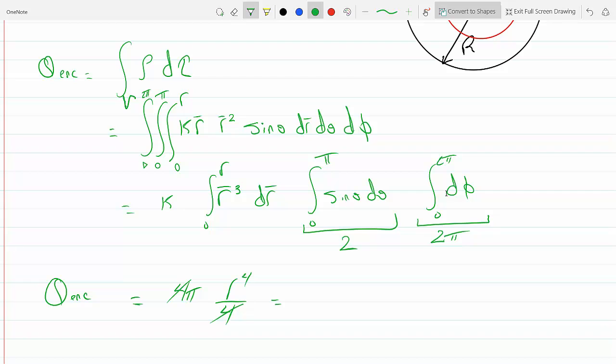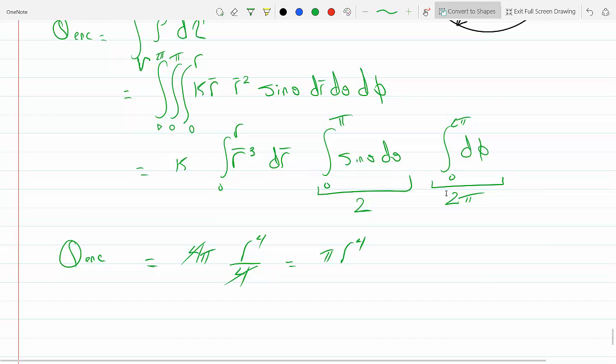So this becomes, so Q enclosed equals 4π, and we have r⁴ over 4 from zero to r will be the same, so this goes away with this, and we get π over 4, we get K π r⁴.